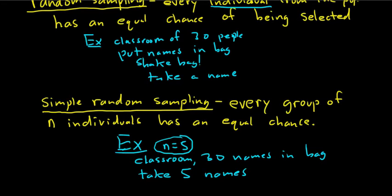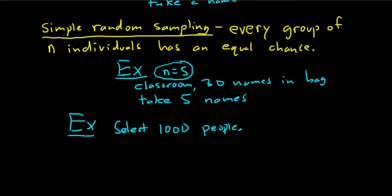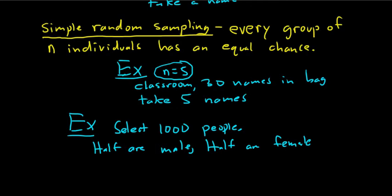Random sampling is when every individual has a chance; simple random sampling is when every group of individuals has a chance. For a tricky example: say you want to select 1,000 people from the world, and half are male and half are female no matter what — so you're taking 500 males and 500 females, picking each group at random to give 1,000 people total.